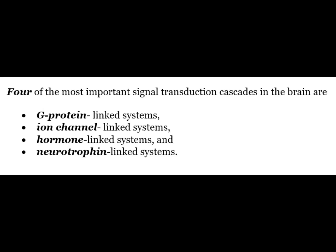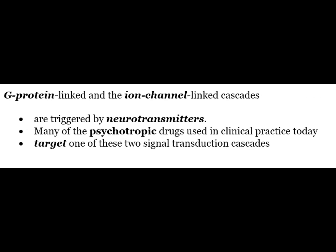Four of the most important signal transduction cascades in the brain are G-protein linked systems, ion channel linked systems, hormone linked systems, and neurotrophin linked systems. G-protein linked and ion channel linked cascades are triggered by neurotransmitters. Many of the psychotropic drugs used in clinical practice today target one of these two signal transduction cascades.